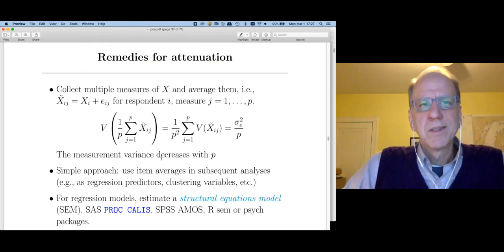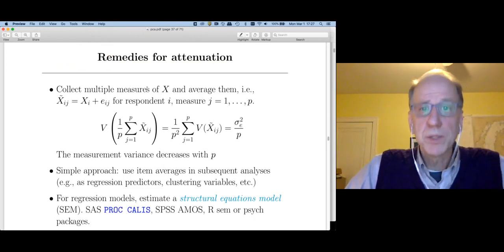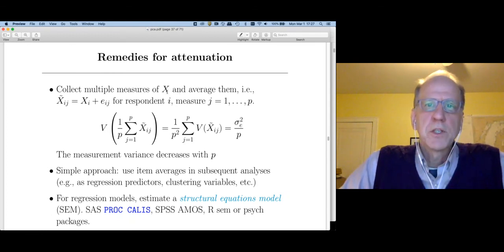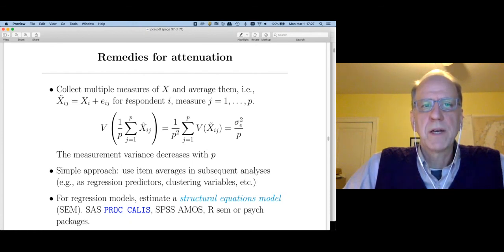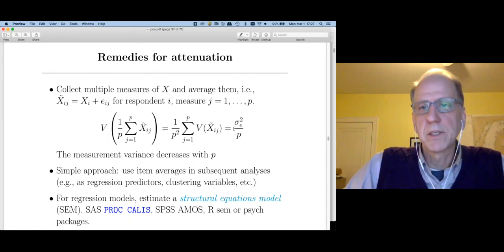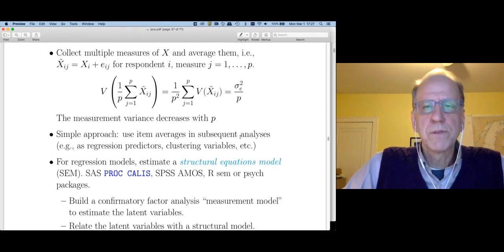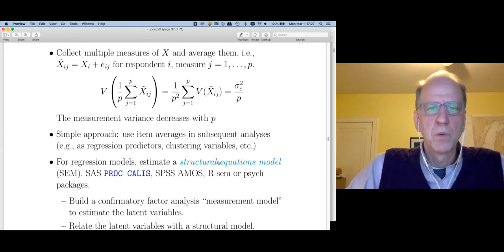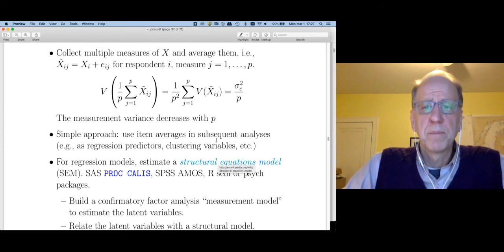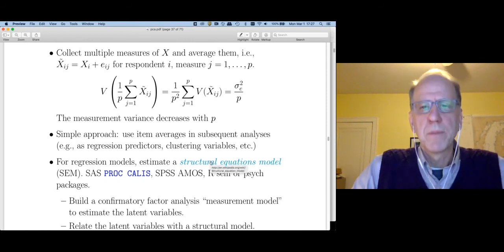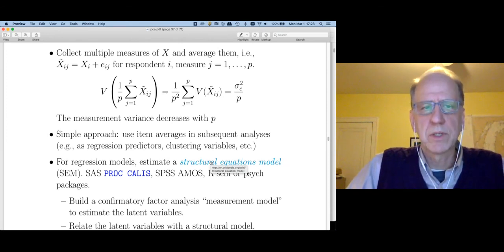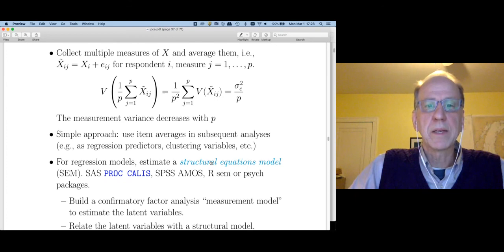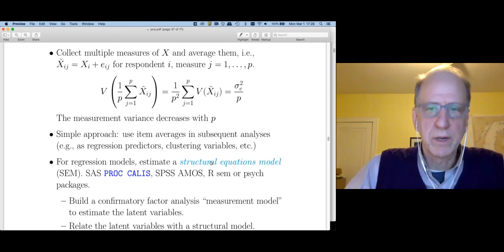What do we do about this? So one thing that we can do is collect multiple measurements of x and then just average them. That's what I told you to do a couple slides ago. So if I have a bunch of test questions measuring your math ability, I compute your average test score. That's going to reduce the attenuation bias. It's not going to go away. But the variance of this is going to decrease with p. A more sophisticated approach is to use structural equation models, which I'm not going to cover in this class. But if you're interested in this, it's a topic that you should go read about. These are a rich class of models that allow us to handle measurement error and relating latent variables that are all subject to this measurement error that we're avoiding.